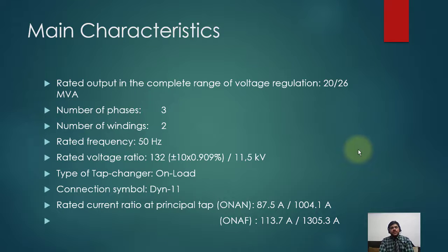Number of phases: three. Number of windings: two. Rated frequency: 50 Hertz. Rated voltage is also mentioned here: 132/11.5 kV plus minus 10%, which is the tap changer range, 10 into 0.909.